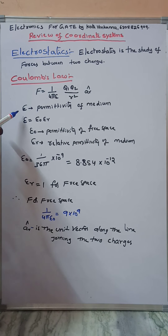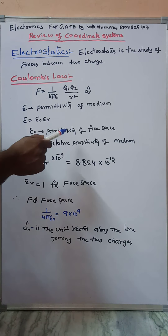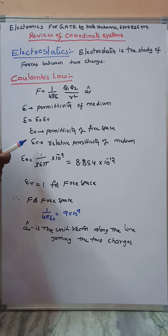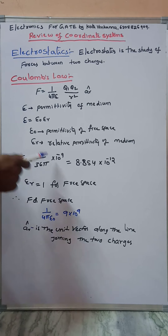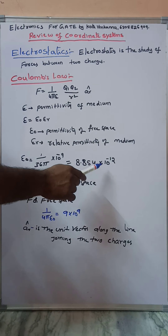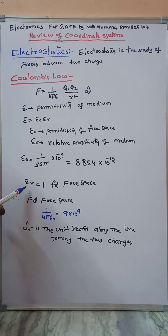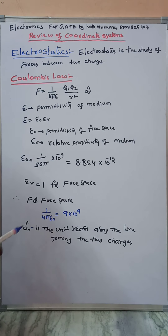Epsilon is the permittivity of the medium, where epsilon equals epsilon-0 times epsilon-R. Epsilon-0 is the permittivity of free space, equal to 1 over 36 pi times 10 to the power minus 9, which equals 8.854 times 10 to the power minus 12. Epsilon-R is the relative permittivity of the medium; for free space it equals 1. For free space, 1 over 4 pi epsilon-0 equals 9 times 10 to the power 9.